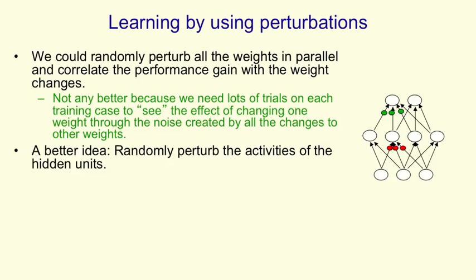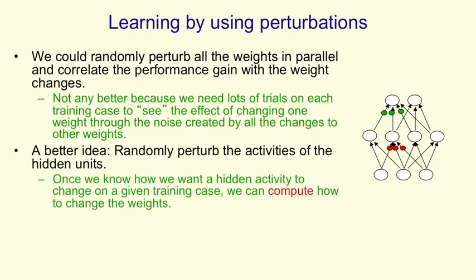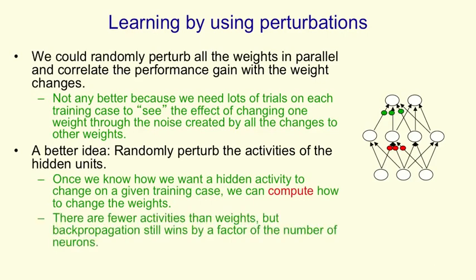Something that does help is to randomly perturb the activities of the hidden units instead of perturbing the weights. Once you've decided that perturbing the activity of a hidden unit on a particular training case is going to make things better, you can then compute how to change the weights. Since there are many fewer activities than weights, there's less to randomly explore, making the algorithm more efficient. But it's still much less efficient than backpropagation — backpropagation still wins by a factor of the number of neurons.